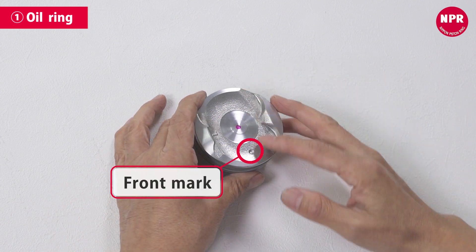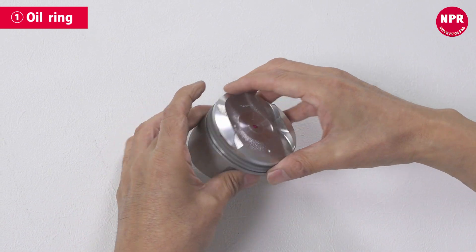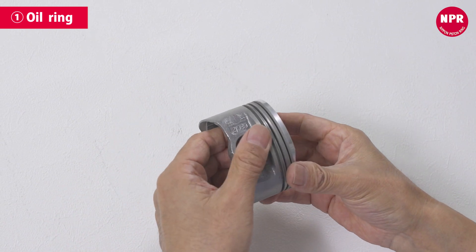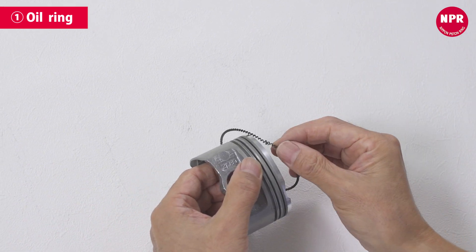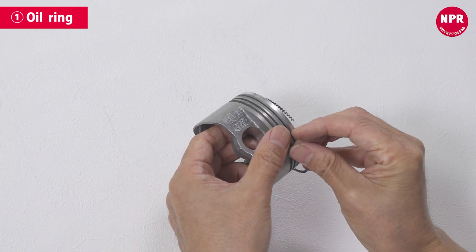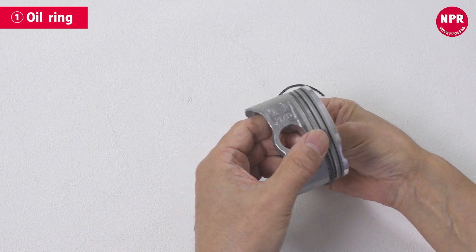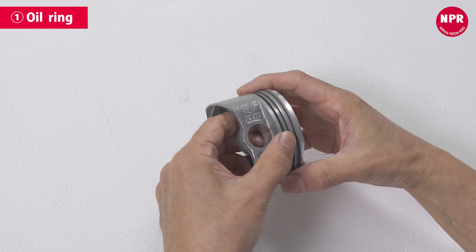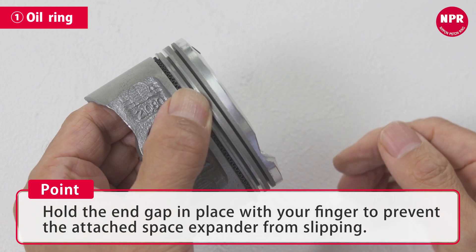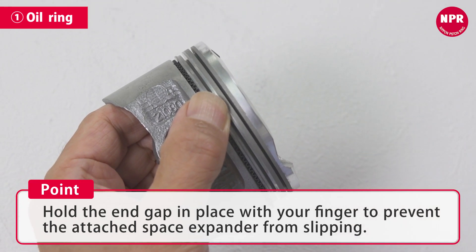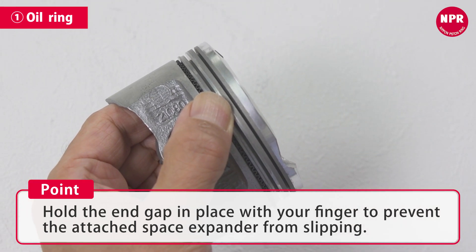First, attach the oil ring. Attach the space expander to the ring groove so that the end gap lines up with the piston's front mark. Hold the end gap in place with your finger to prevent the attached space expander from slipping.